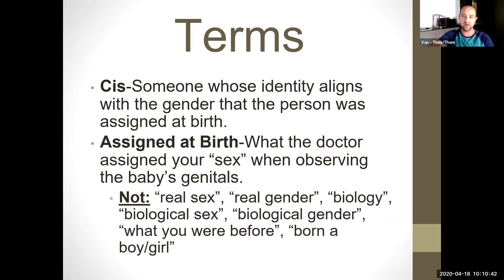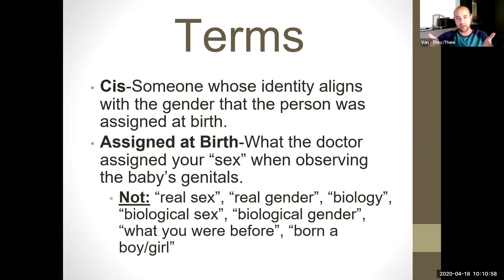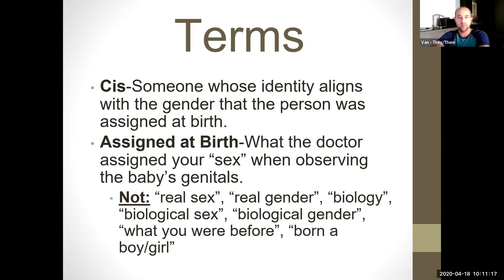So, cis or cisgender is somebody whose identity aligns with the gender that the person was assigned at birth. Assigned at birth is what the doctor assigned your sex when they were observing essentially your genitals. So you come out of the womb and they look at the genitals and classify as male or female. But this is not somebody's real sex. It's not somebody's real gender. It's not biology, not biological sex, not biological gender. People aren't born boy or girl, and we'll get into that later on.